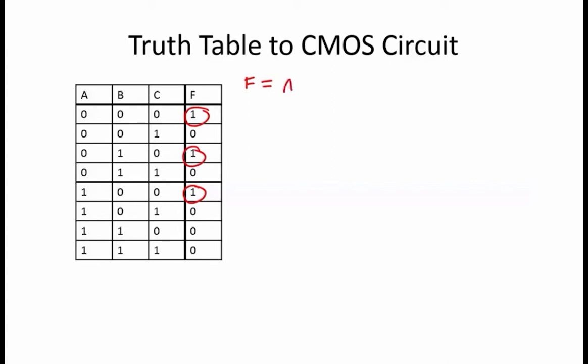For this truth table, F equals NOT A, NOT B, NOT C, or NOT A, NOT B, C, or NOT A, B, NOT C.